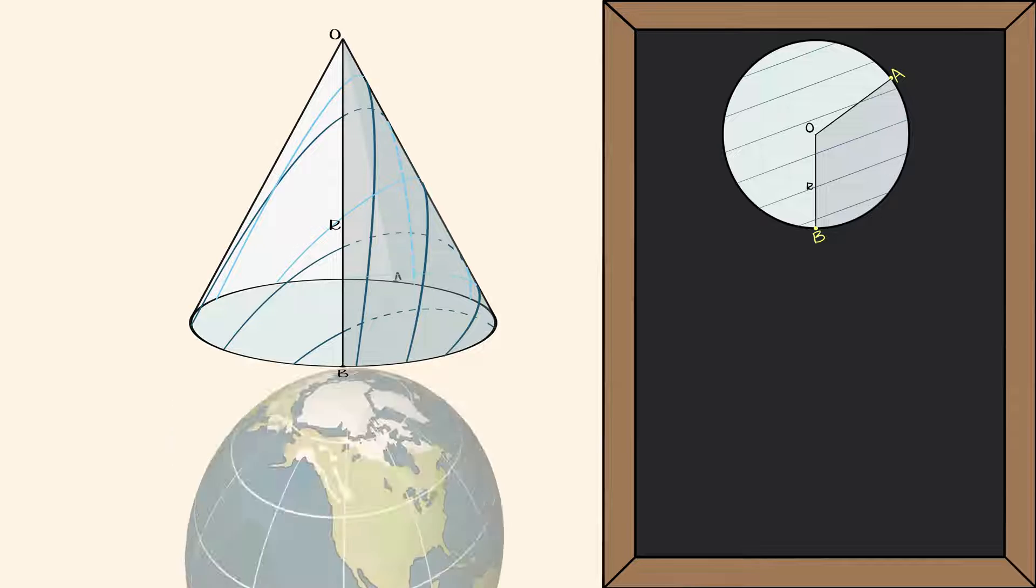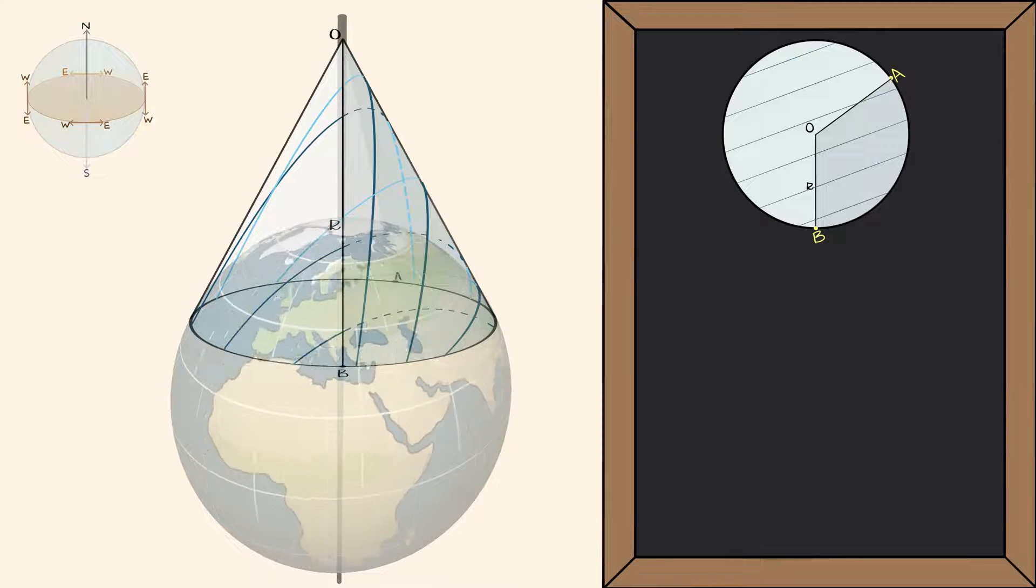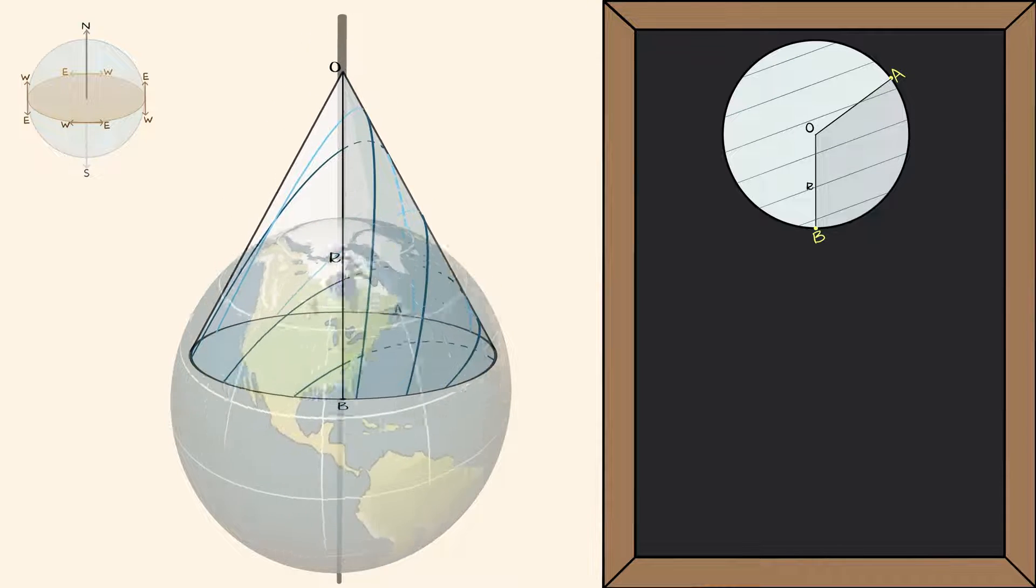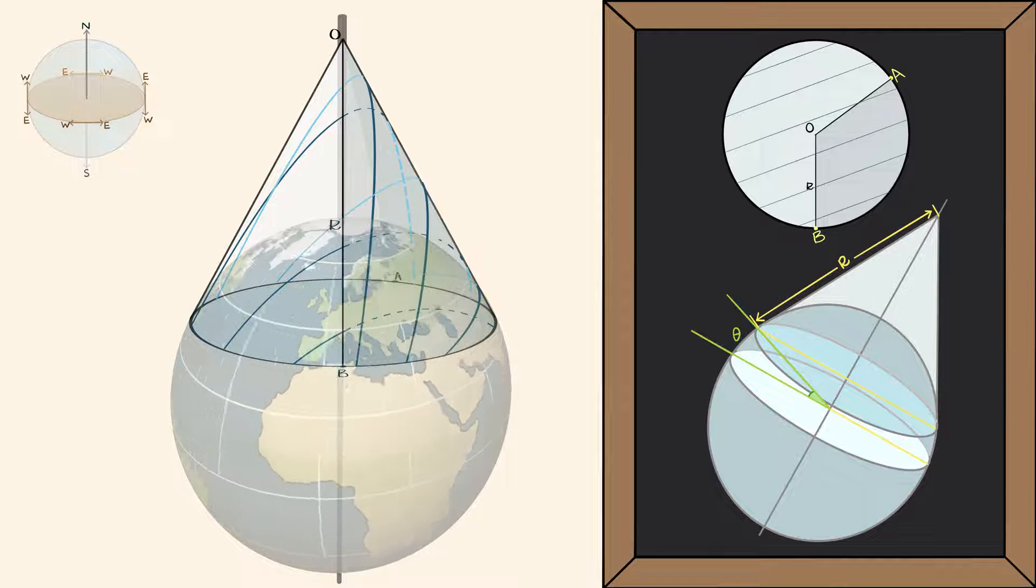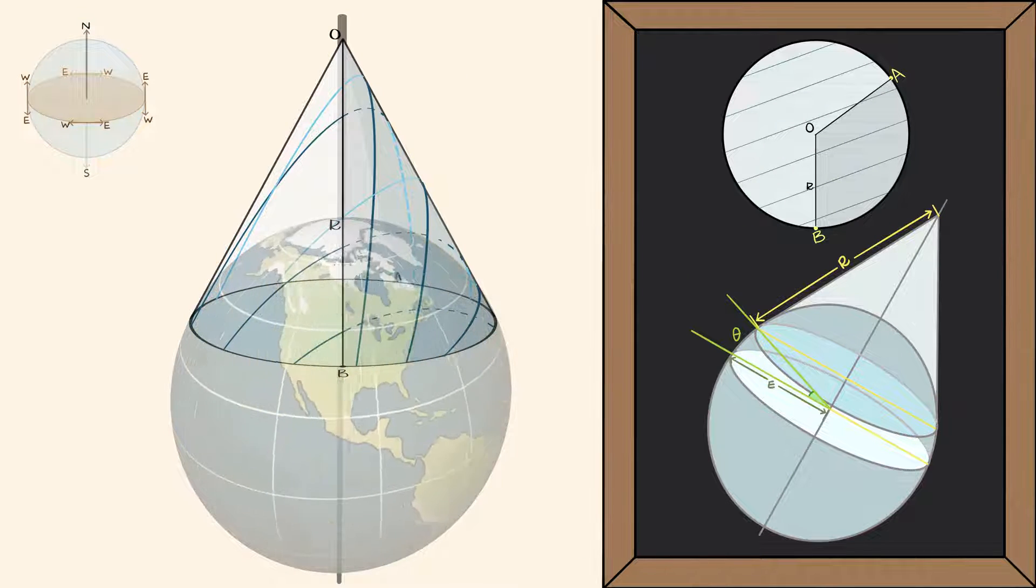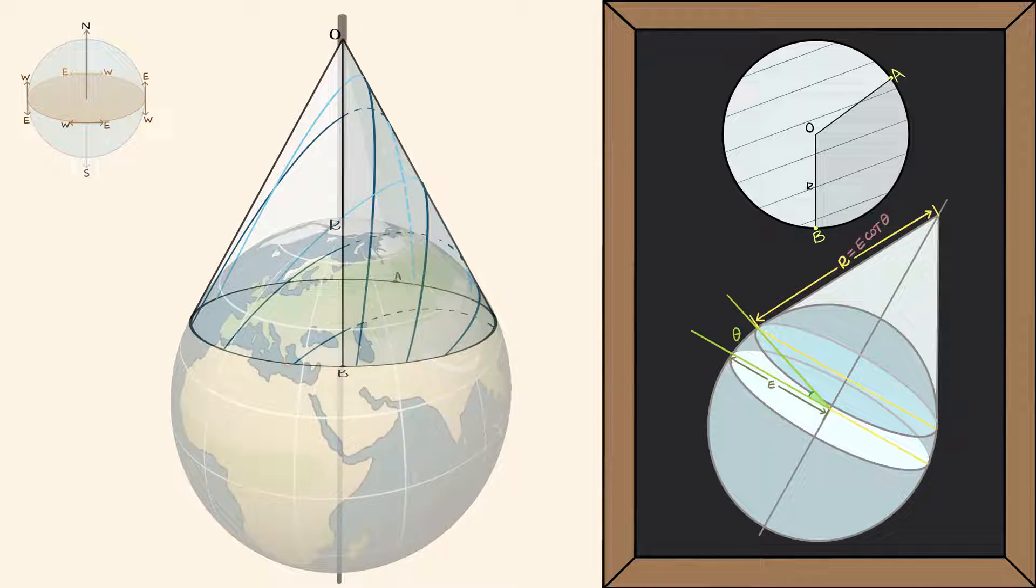Next, we put this cone over the North Pole so that point O is on Earth's axis. Adjust the cone so that the cone touches Earth only at a certain latitude line. Let's call this latitude theta degrees and call Earth's radius E. Now when we set it up like this, R just happens to be E times cotangent theta.